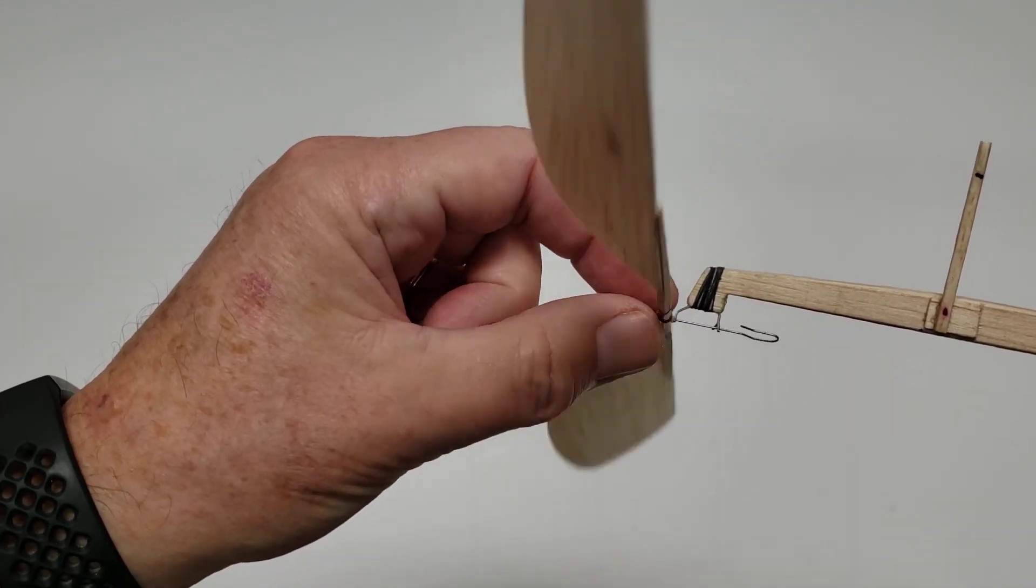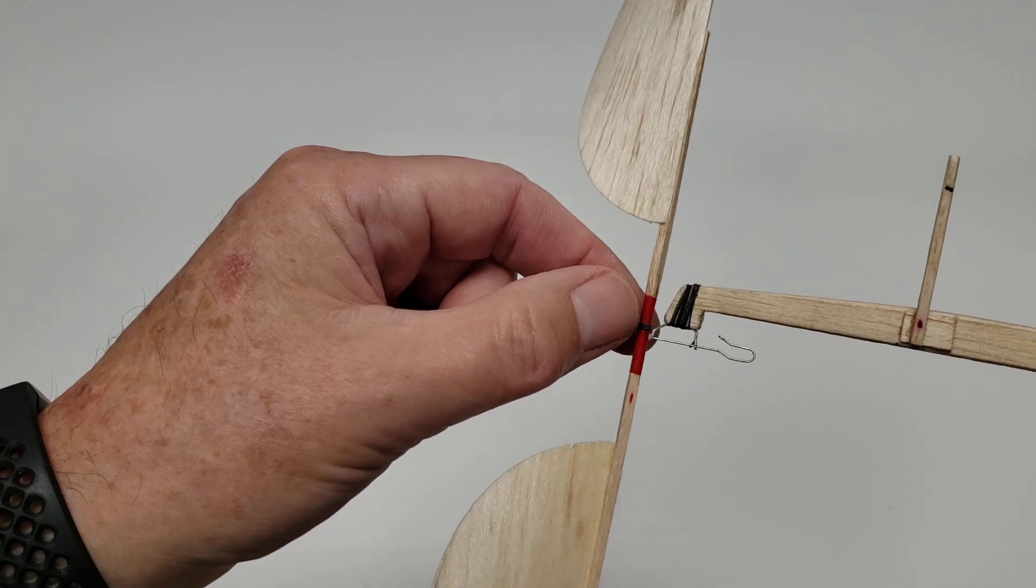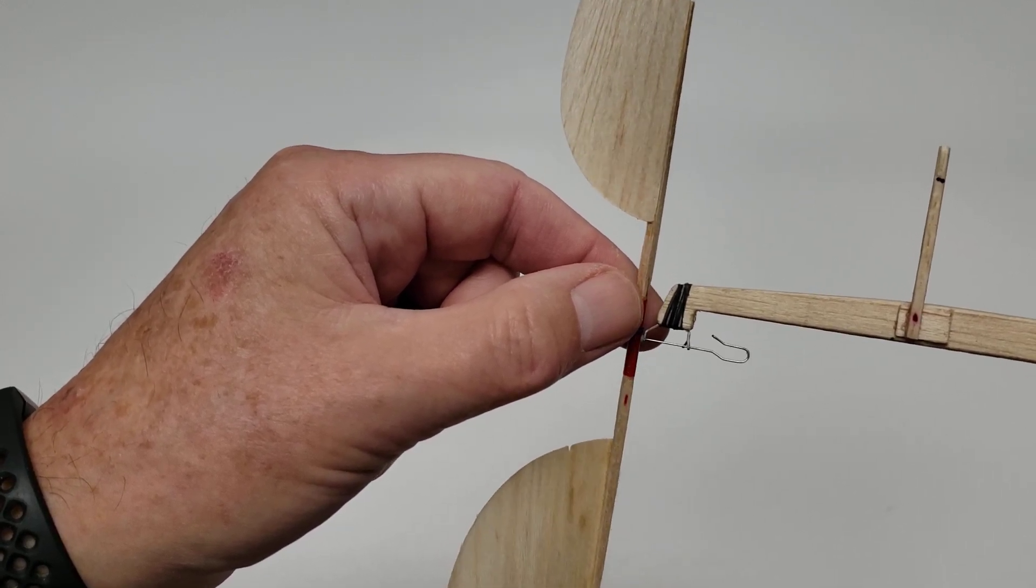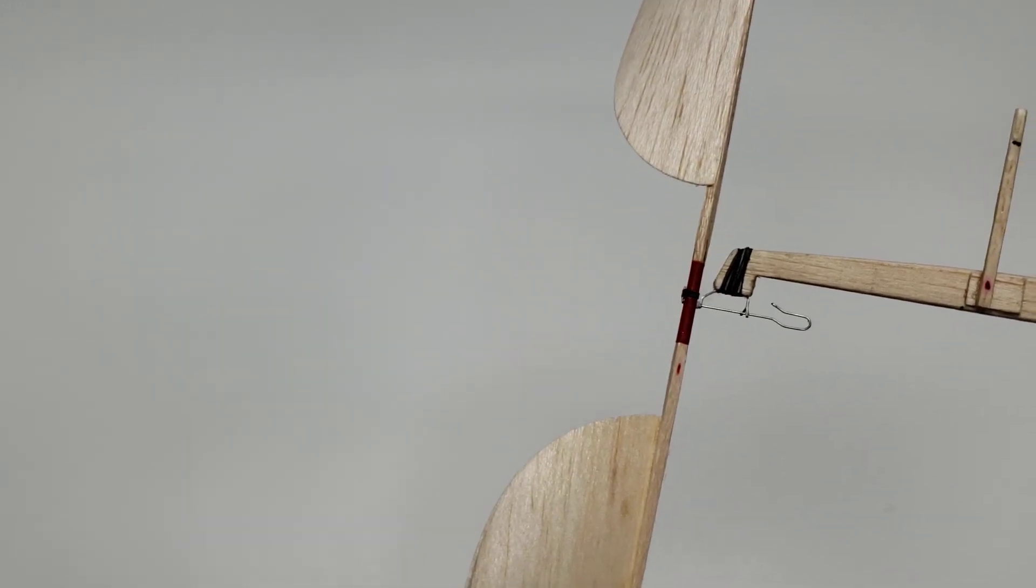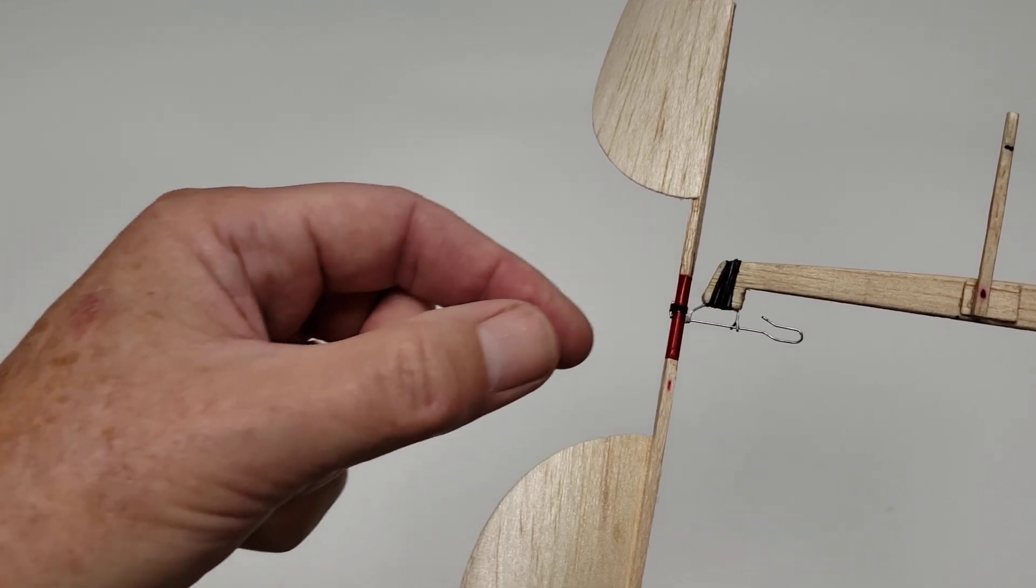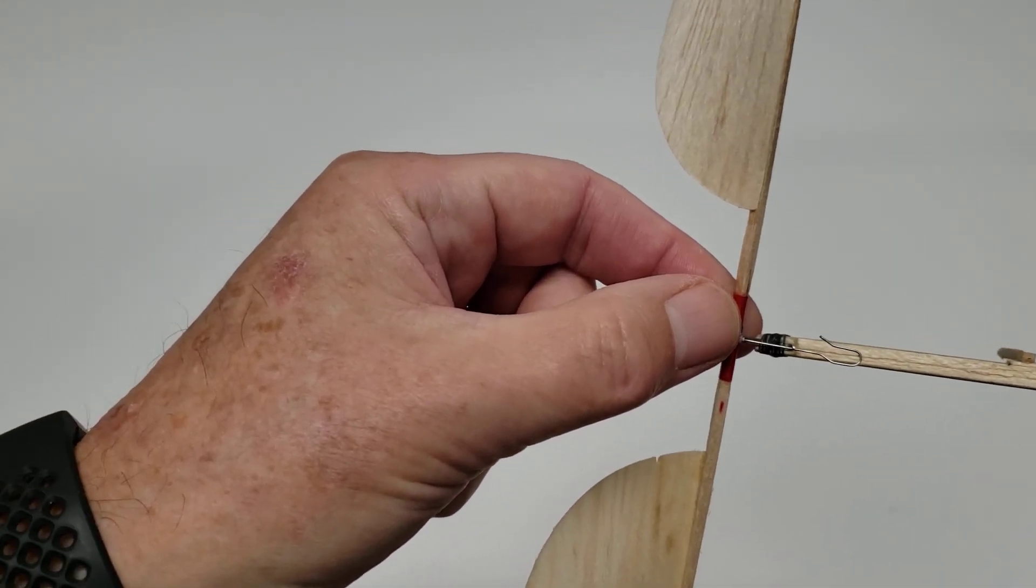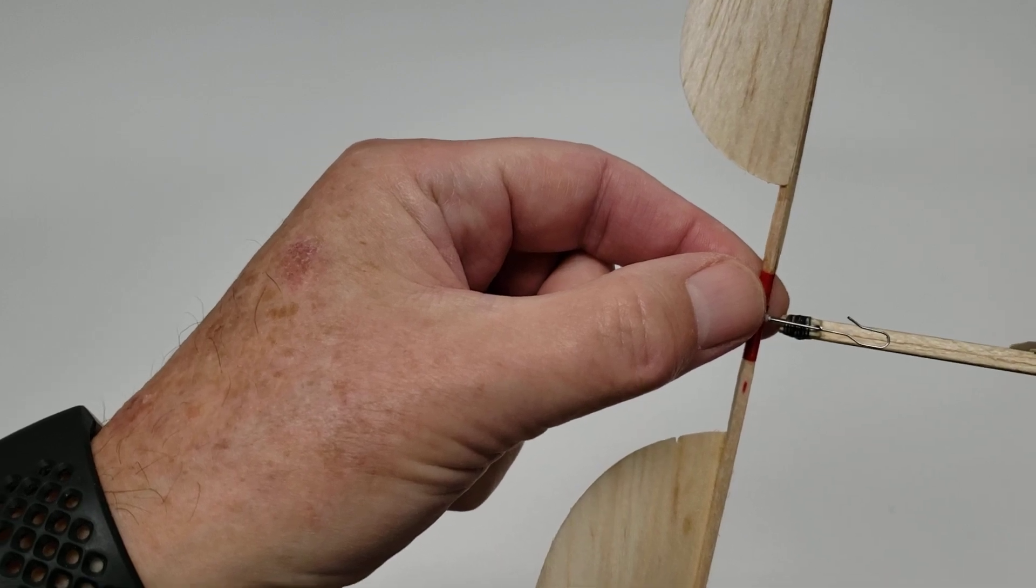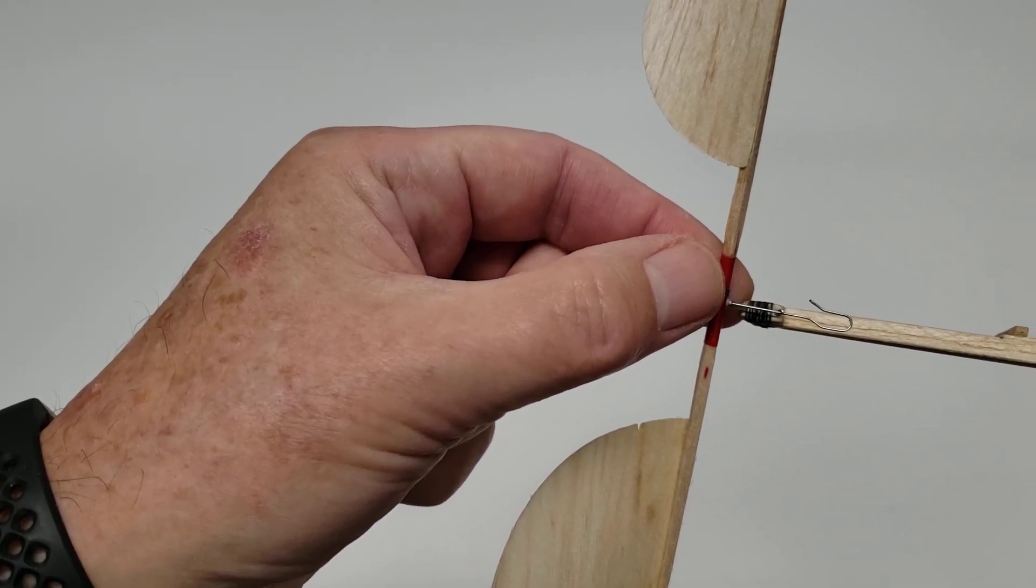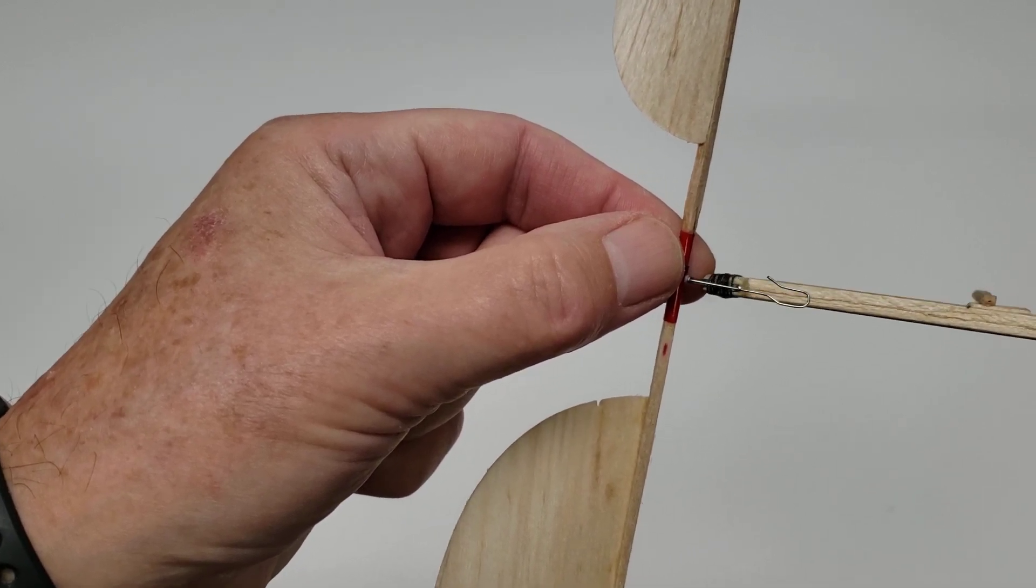It's beneficial because you can adjust the thrust angle by bending those arms carefully. You want zero down thrust and zero up thrust typically in an indoor duration plane. This thrust bearing has been mounted with about two degrees of left turn. And that's appropriate for an indoor plane of this type.